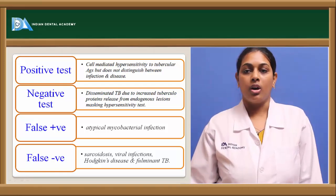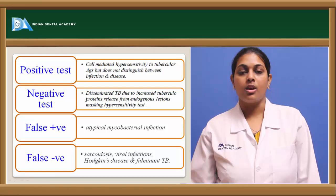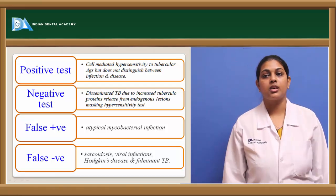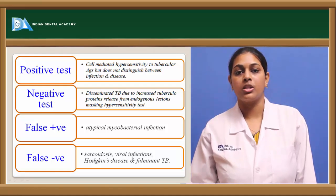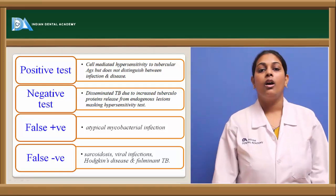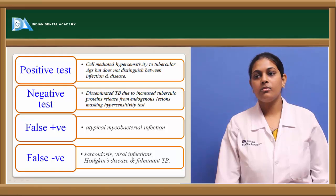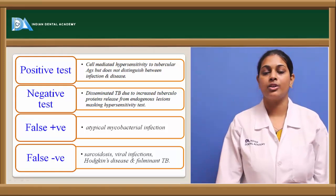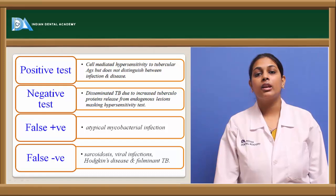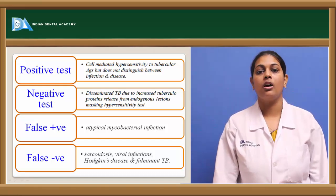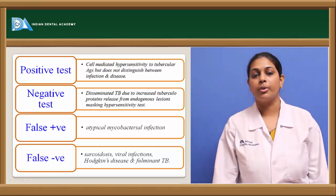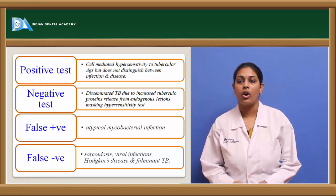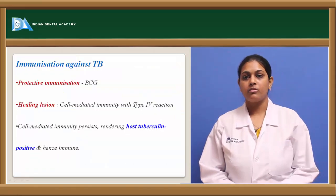Coming to false positive test: atypical mycobacterium infection shows a false positive result since it is not as virulent as classical Mycobacterium tuberculosis. Coming to false negative test: conditions showing false negative for Mantoux include sarcoidosis, certain viral infections, Hodgkin's disease, and disseminated tuberculosis.